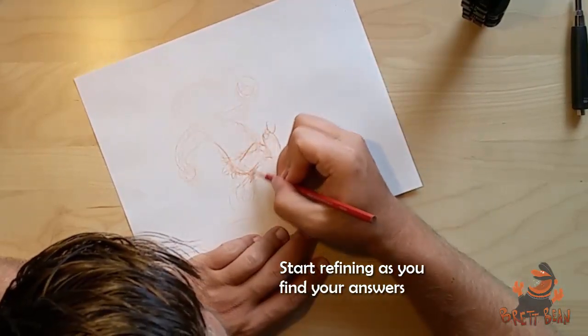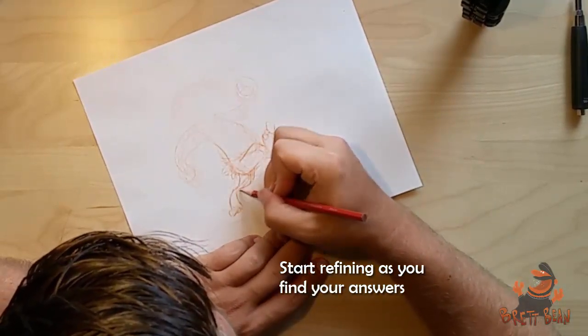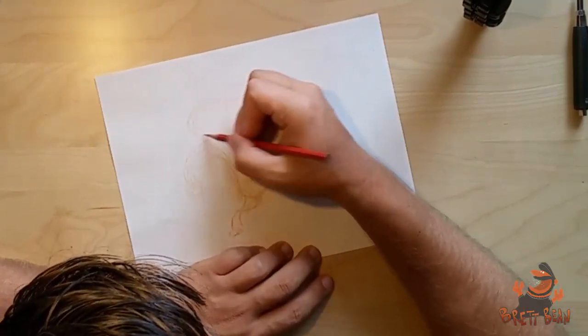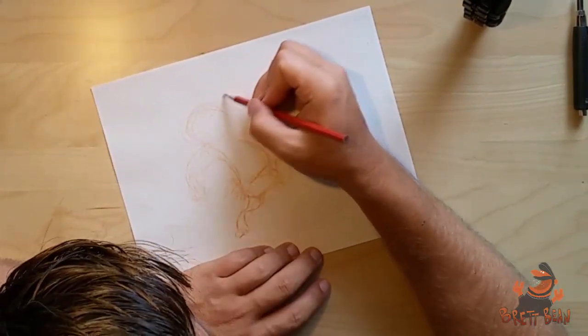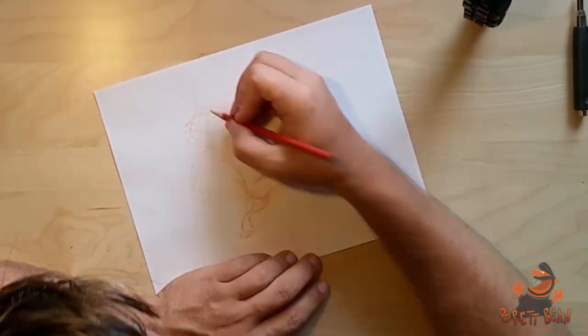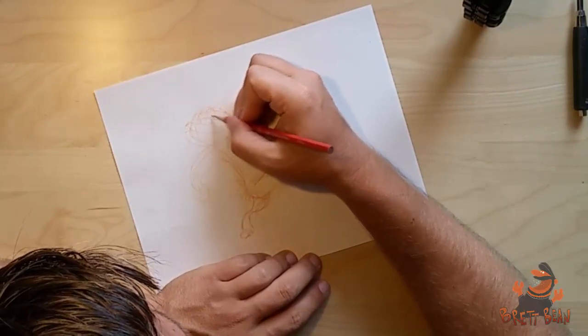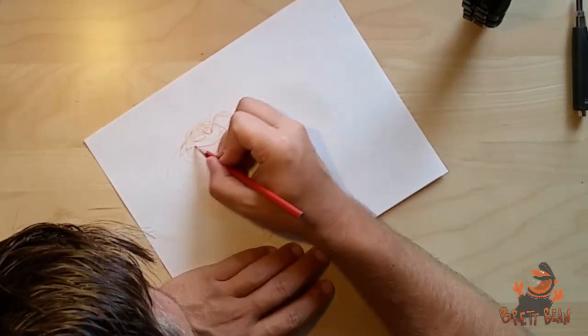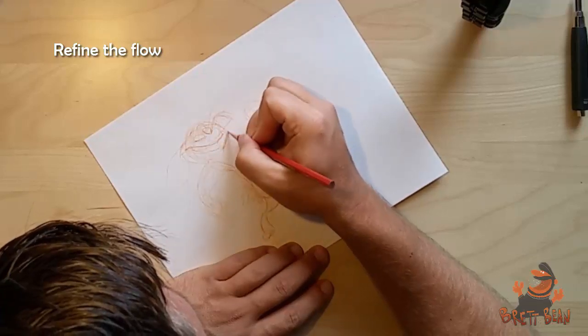Work big to small, find your big shapes, then find your smaller shapes and kind of work within that. So that even big to small is also sort of light to dark as well. It's the same concept of going really fast and loose and then refine as you go.